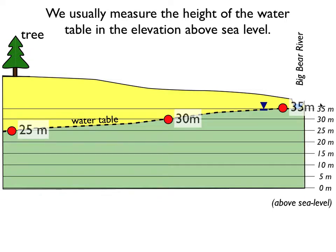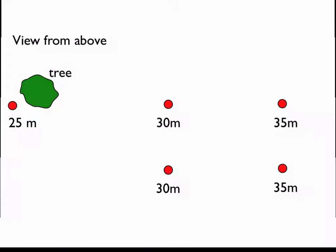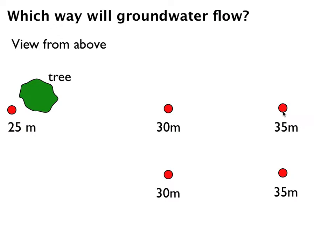We're still looking at a slice through the earth, but let's fly around and look at things from up above. Here are those monitoring wells that told us the elevation of the water table at three different points. Here's our tree viewed from above.